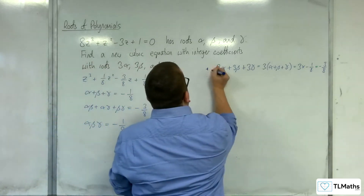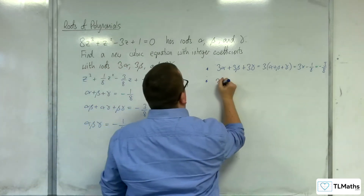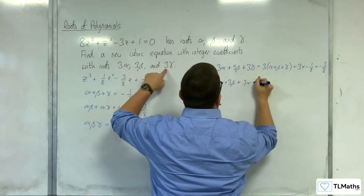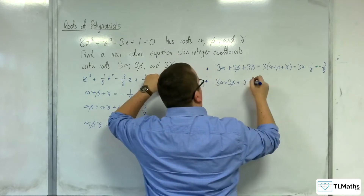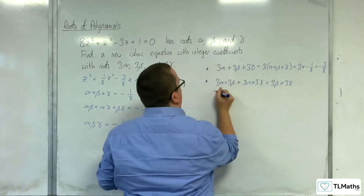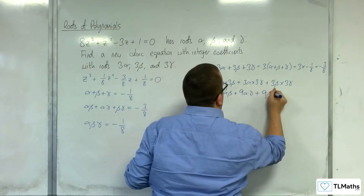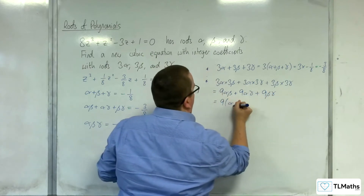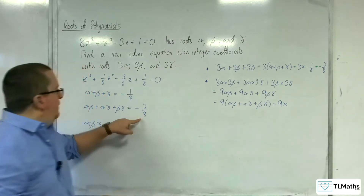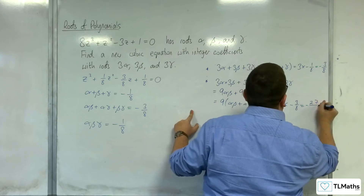The second part is to find the sum of pairwise products. We need 3 alpha times 3 beta, plus 3 alpha times 3 gamma, plus 3 beta times 3 gamma. That gives us 9 alpha beta plus 9 alpha gamma plus 9 beta gamma, which is 9 lots of alpha beta plus alpha gamma plus beta gamma — so 9 lots of minus three eighths, giving minus 27 eighths.